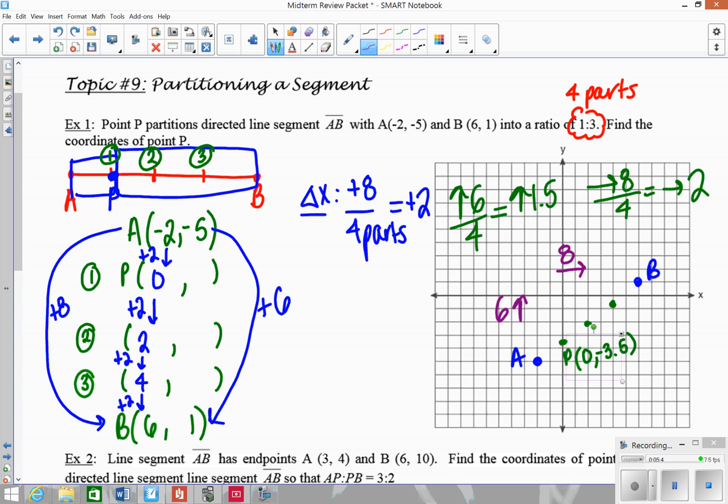So then we do the same thing for y's. The change in y's from A to B was plus 6, but since I had 4 parts, I have to divide that by 4. So the change in y was really add 1.5. So you add 1.5, we get negative 3.5, add 1.5 to that value, and you get negative 2, add 1.5 again, we get negative 0.5, add 1.5 again, and you get back to 1.